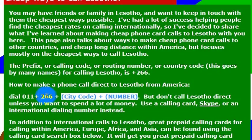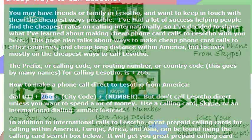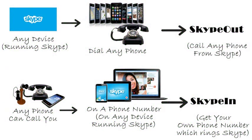The international country code is 266 for Lesotho. But I wouldn't really recommend calling direct — your phone company will charge you a lot of money. If you want to call a phone number, I really recommend using Skype. We detail how to make free and low-cost calls using Skype in other videos.